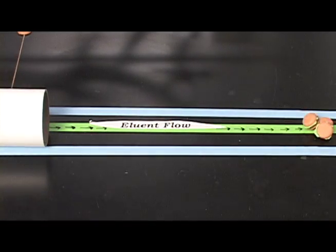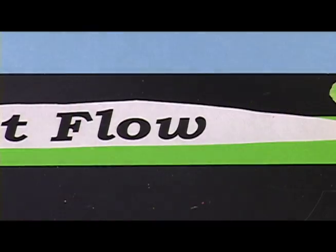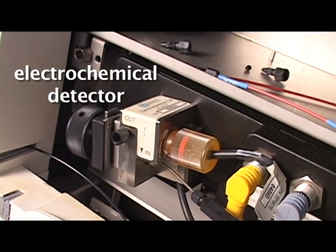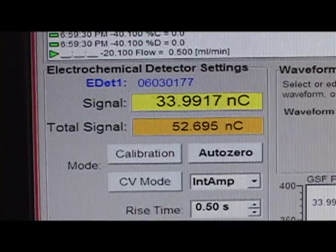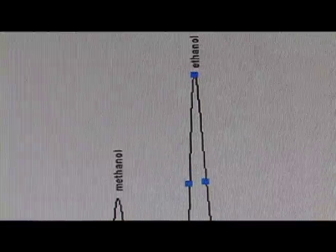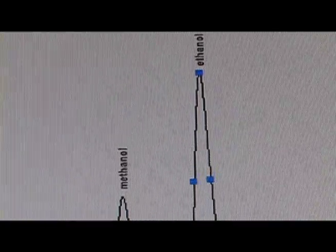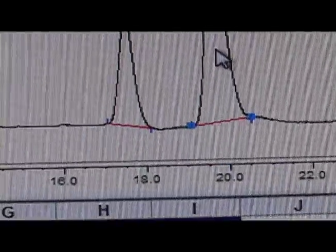After the column, the compounds will then pass through a detector separately. The chromatogram you see here is a representation of the signal from the detector after a mixture of methanol and ethanol was injected into the system. The methanol has been retained by the column for 17 minutes and the ethanol for 20 minutes.